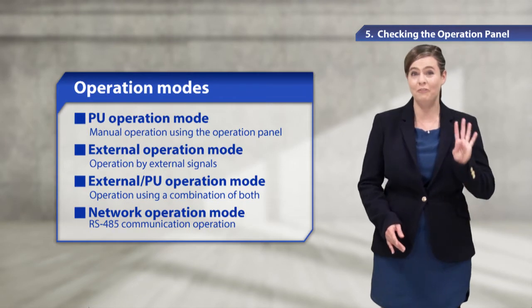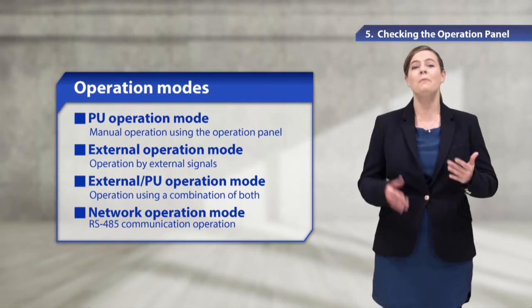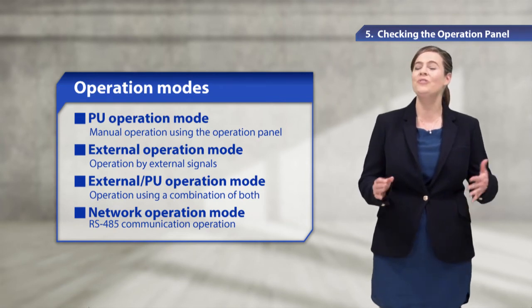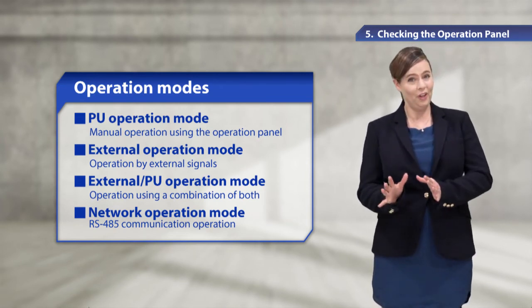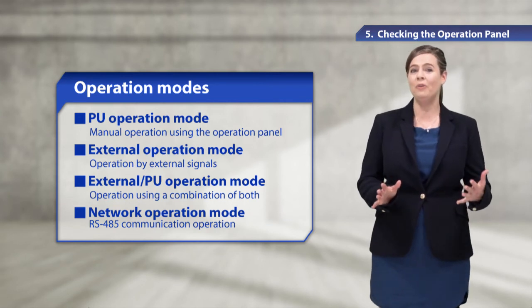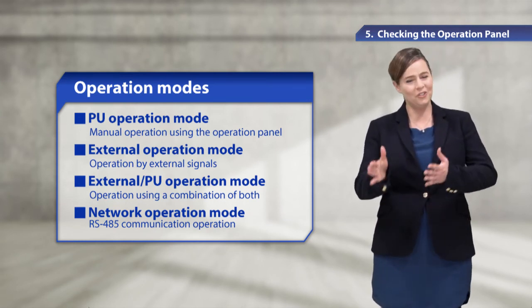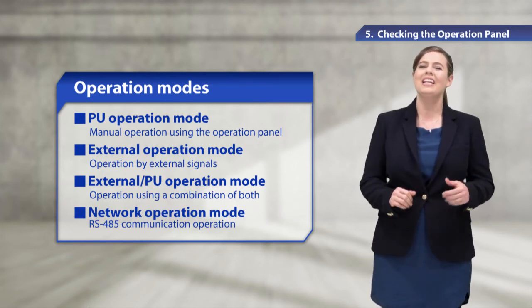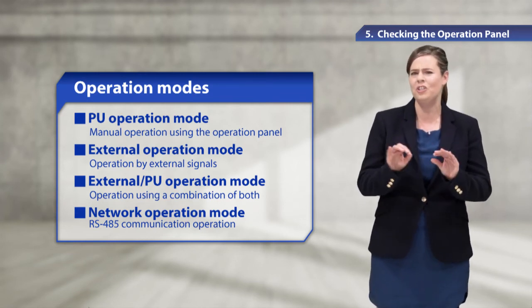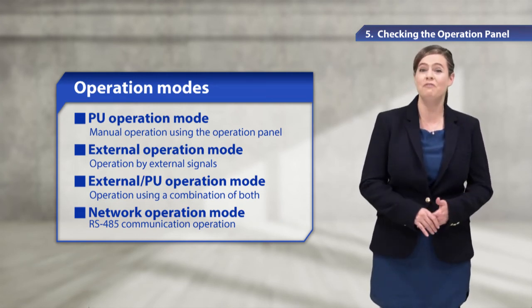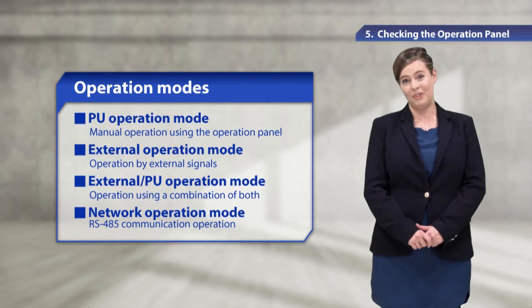The inverter has four operation modes. The PU operation mode is for manual operation using the operation panel. The external operation mode is for operation by using external signals. The external PU operation mode is for operation using a combination of both. And the network operation mode is for RS-485 communication operation.